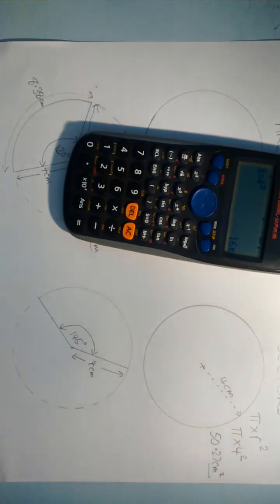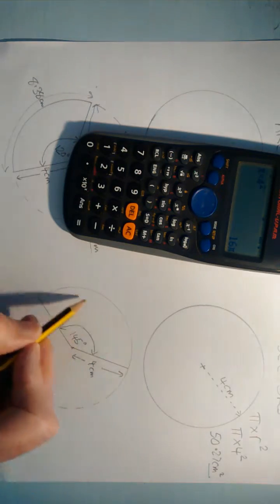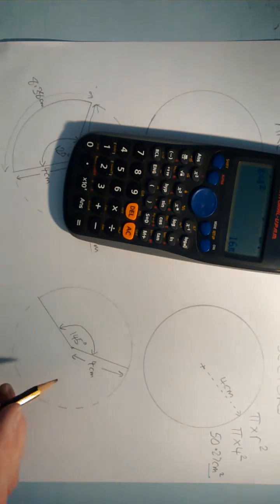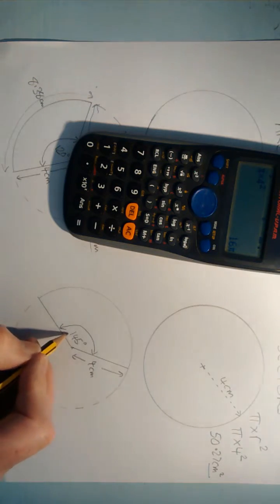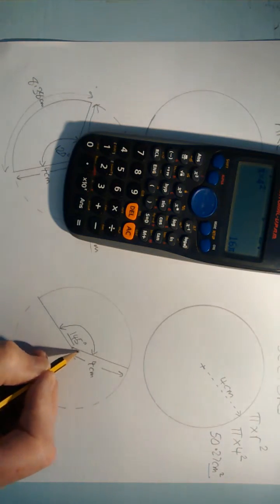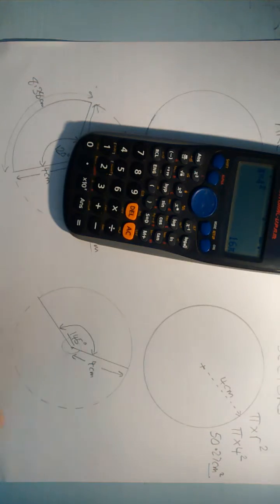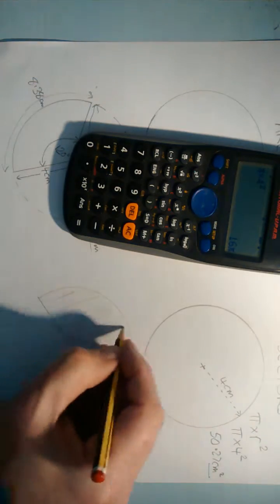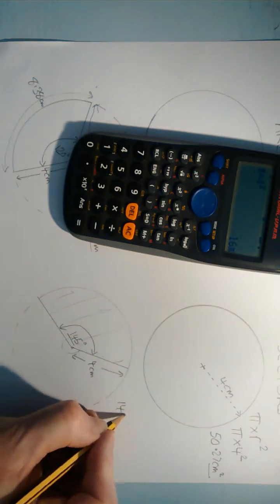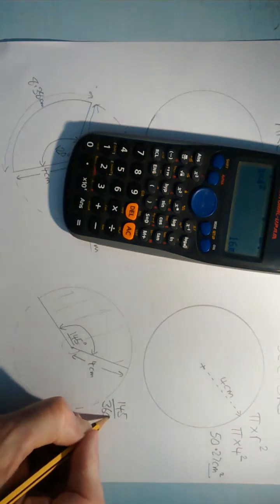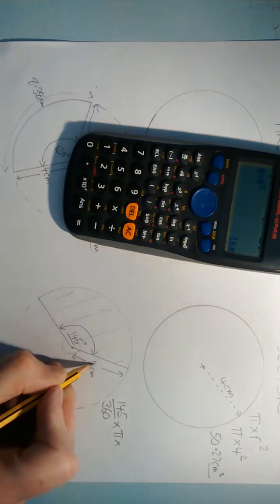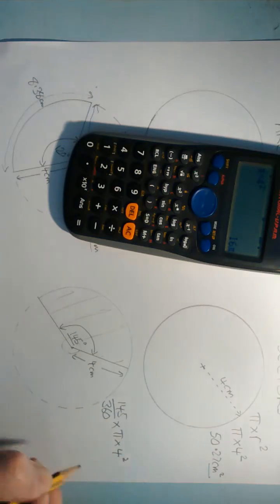So the same principle applies to sectors. If we're working out the area of this sector, we would work out the area of the whole circle. But it's not the whole circle. In this case, it's 145 out of the 360 degrees. So the area for this sector here is 145/360 of pi times the radius squared.